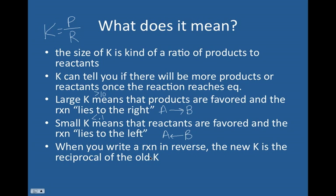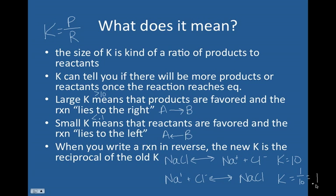When you write a reaction in reverse, the K of that reaction is going to be the reciprocal of the K of the original reaction. So let's just say that we have this reaction and it has a K value of 10. If we reversed that reaction and made the products reactants and the reactants now the product, then K is now going to be equal to the reciprocal of 10, 1 over 10, or just 0.1.